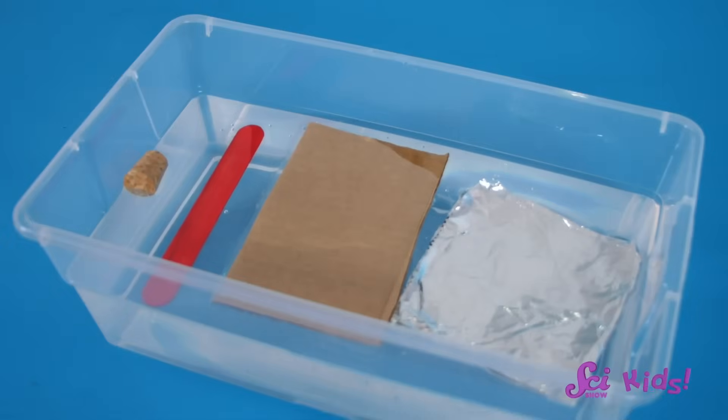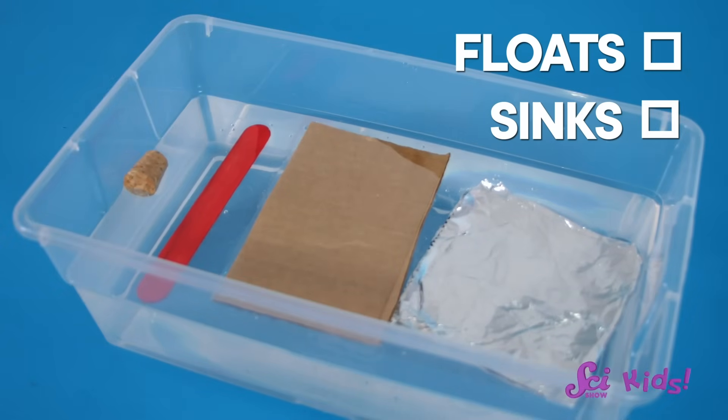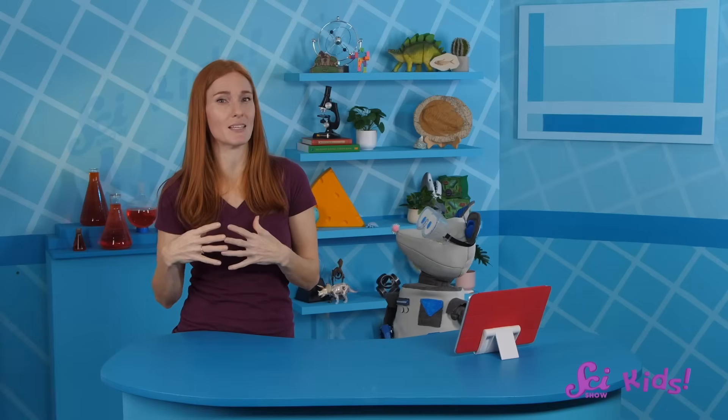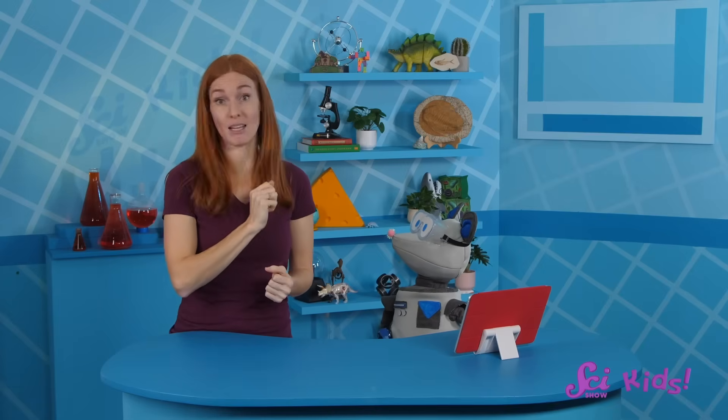We need something that floats, so let's try out our other things. Okay, of the materials we tested, the craft sticks, corks, cardboard, and aluminum foil floated. So, these things seem to be good things to use as part of a raft. The sponge and the paper floated for a while, but eventually sank. And the modeling clay didn't float at all. So while we might be able to incorporate these things into our raft, it has to be made mostly of something that floats.